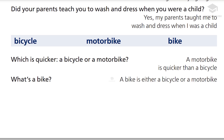Bicycle. Motorbike. Bike. Which is quicker, a bicycle or a motorbike? A motorbike is quicker than a bicycle. What's a bike? A bike is either a bicycle or a motorbike.